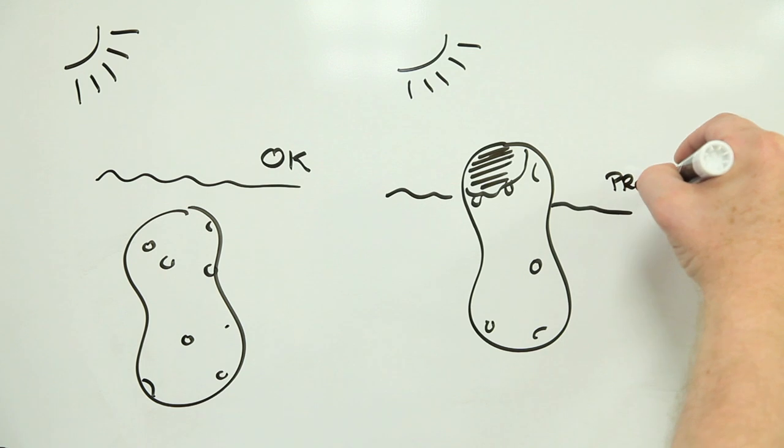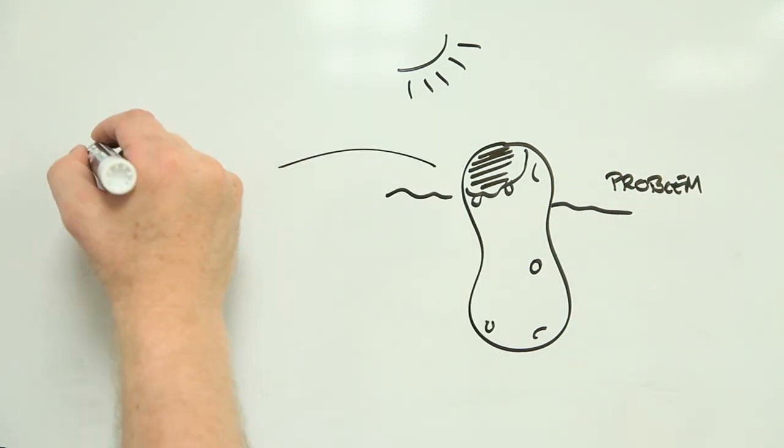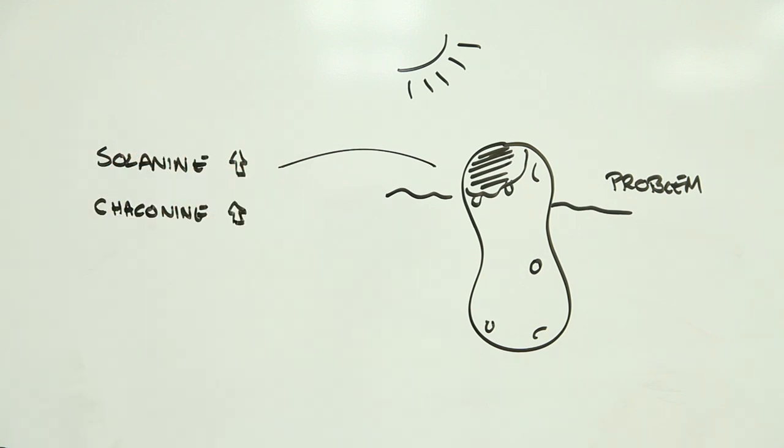But when potatoes are exposed to light, things begin to get out of whack. Solanine and chaconine begin to build up. At the same time, the amount of chlorophyll, the substance that makes leaves green, also increases. Of course, chlorophyll isn't poisonous, but the green tinge it creates does signal the increased presence of the compounds that are.